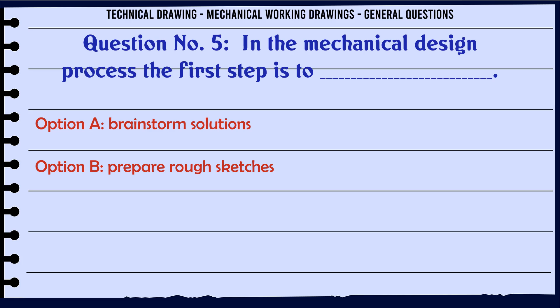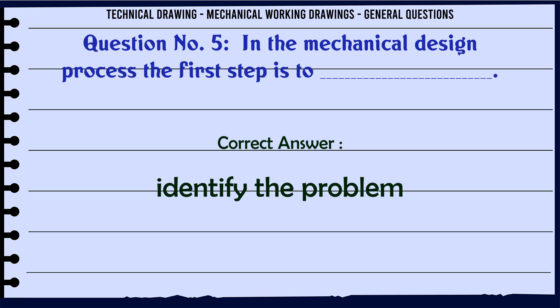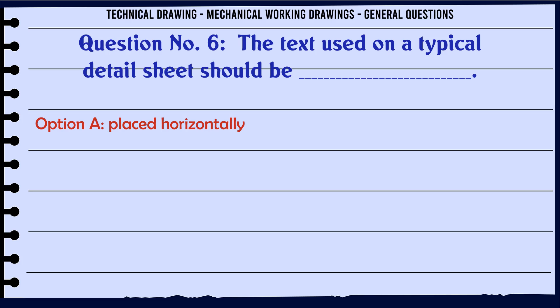In the mechanical design process the first step is to: A. Brainstorm solutions, B. Prepare rough sketches, C. Prepare a budget, D. Identify the problem. The correct answer is Identify the problem.